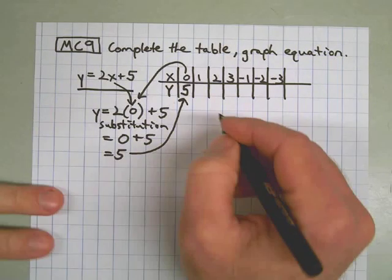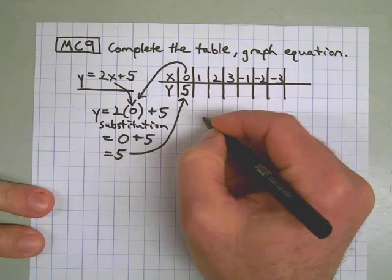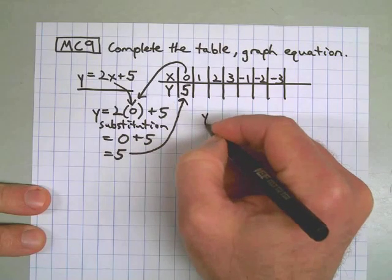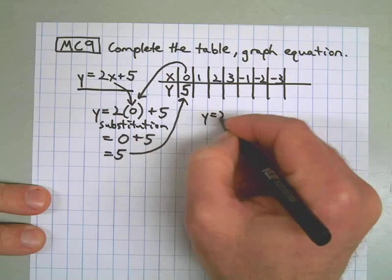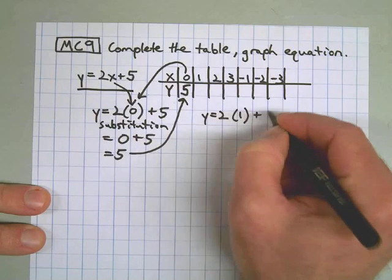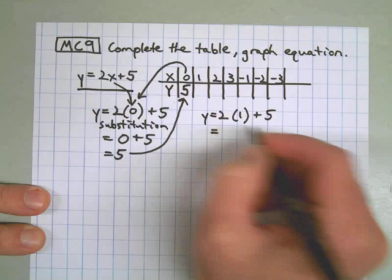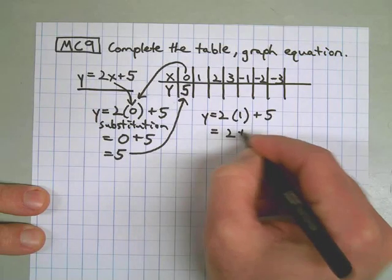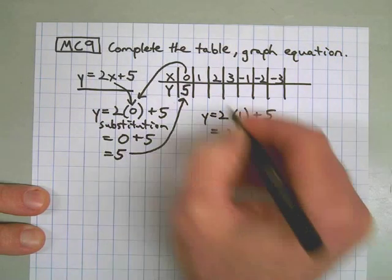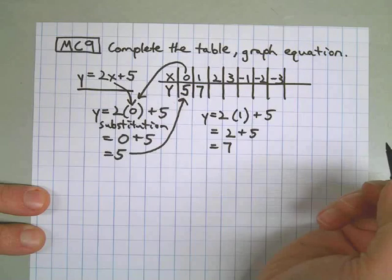Okay, let's show our work and do another one. Once you get the hang of this, you can do a lot of these using your mental math skills. I'm using the 1. 2 times 1 is 2 plus 5 is 7. In it goes.